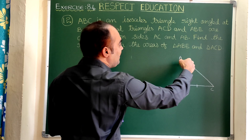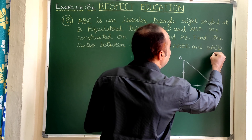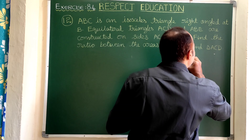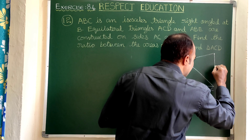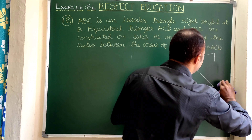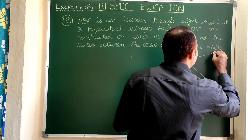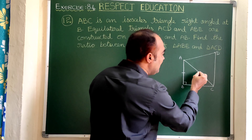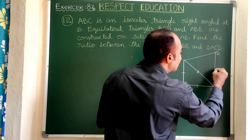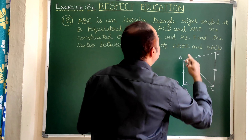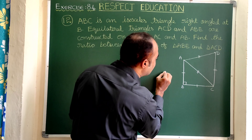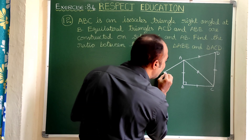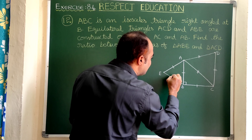Now, for the equilateral triangle ACD on side AC, we take a new point D and join AD and DC to form the equilateral triangle. Similarly, for side AB, we take another point E and join AE and BE to form equilateral triangle ABE, in which all three sides are equal.